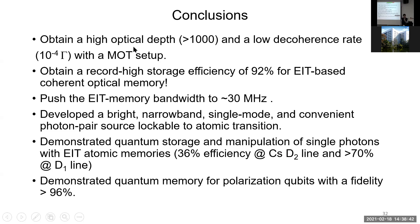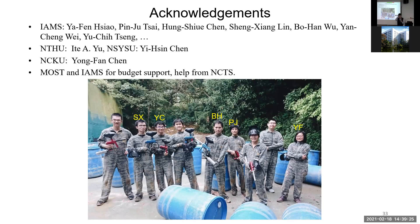Okay, so here is my conclusion. We obtained very high optical depth, more than 1,000, and a very low decoherence rate. Based on that, we obtained very high storage efficiency. Then we pushed memory bandwidth to about 30 megahertz. Then we developed a quantum light source based on the SPDC mechanism. We demonstrated single photon storage with 36% efficiency for D2 line and more than 70% for D1 line. Then we realized the quantum memory for polarization qubits with fidelity higher than 96%. I want to thank my collaborators, Professor Yu and Professor Chen Yong-fan, and all my previous team members. Thank you very much.